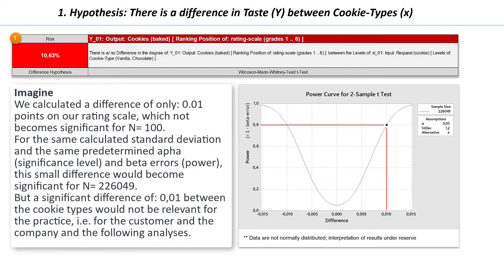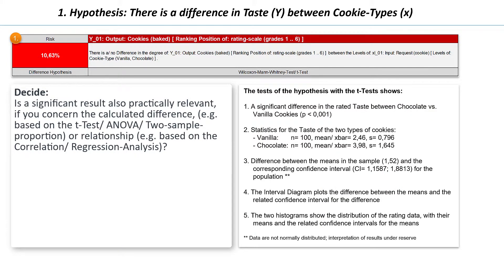But in practice, this small difference probably has no relevance. It is irrelevant in practice that one cookie type is rated on average with 2 points and another with 2.01 points. Therefore you should always ask yourself, if you get a statistically significant result, whether the difference is relevant for your practice. Does a difference have practical relevance, even if you base it on the lowest expected difference value of the confidence interval, which is 1.16 in our case? We will continue this topic in the relationship hypothesis, as well as in the control phase, when it comes to proving a before-after difference.